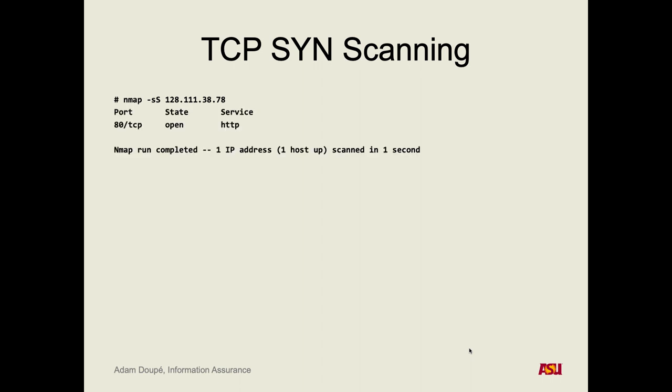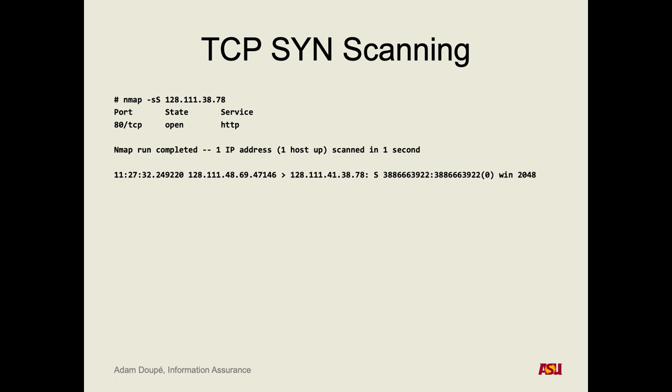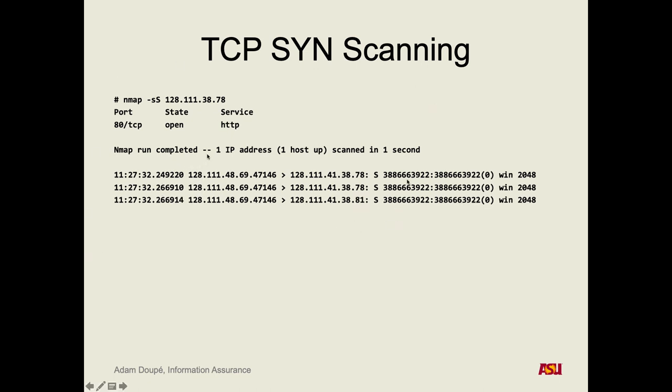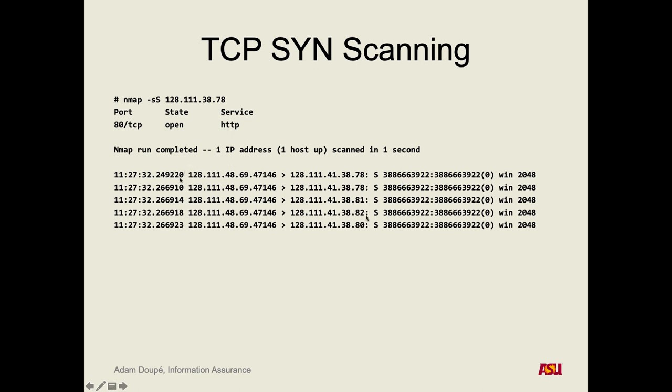Looking at the tcpdump output to see what packets actually got sent: first there's a timestamp, then the IP address, then a dot and the port number, and arrows indicate packet direction. We can see SYN packets sent to ports 78, 81, 82, 80, 79 — they don't go in order necessarily.